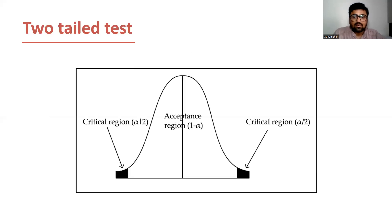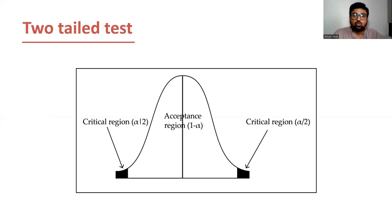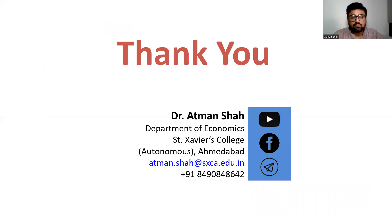Here, the critical region is on both sides. The critical region is alpha by 2 — we have the critical region on the right-hand side and the left-hand side. Therefore, it is known as the two-tailed test. If you find this video useful, kindly like, share, comment, and subscribe to our YouTube channel. Thank you.